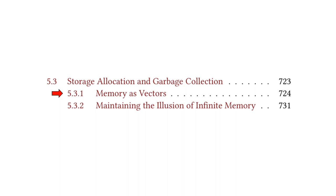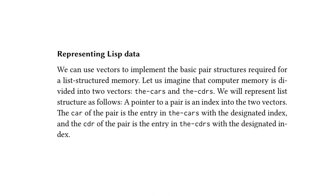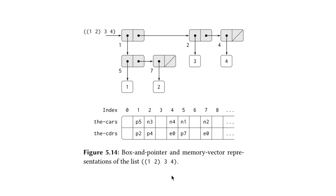We jump into subsection 5.3.1, memory as vectors. The text reads: representing LISP data, we can use vectors to implement the basic pair structures required for a LISP structured memory. Let us imagine that computer memory is divided into two vectors — the cars and the cdrs. A pointer to a pair is an index into the two vectors. The car of the pair is the entry in the cars with the designated index, and the cdr of the pair is the entry in the cdrs with the designated index. The textbook provides an example of a list of the numbers 1, 2, 3, 4, shown in figure 5.14, which we're looking at right now.